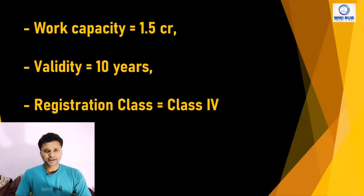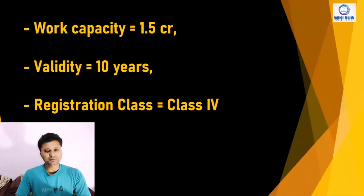If you have a diploma and degree registration, your license — that is, registration — is valid for how many years? Your registration will be valued for 10 years. Work capacity means a maximum of 1.5 crore rupees, and the registration class name is Class 4. According to the capacity of the contractor — according to financial status and capability — different people get different class registrations: Class 7, Class 6, Class 5, all the way up to Class 1 and unlimited.